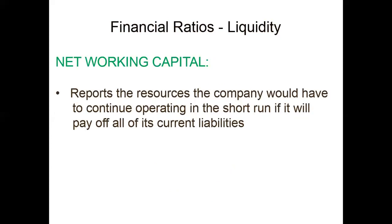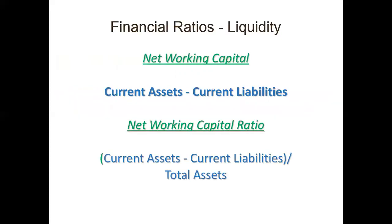Now, net working capital reports the resources the company would have to continue operating in the short run if it paid off all of its current liabilities. From the definition itself, the base formula is current assets less current liabilities. It becomes alarming if you have more liabilities than current assets. The net working capital ratio formula is: current assets minus current liabilities as the numerator, divided by total assets as the denominator.